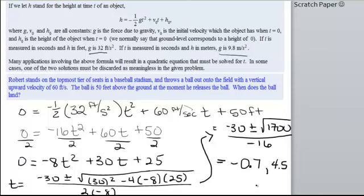Now, what do these numbers represent again? This is the time that it takes the ball to land. So, can it land in negative 0.7 seconds? Can you go back in time? It can't, right? So, that means that it must be landing in approximately 4.5 seconds.